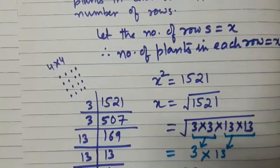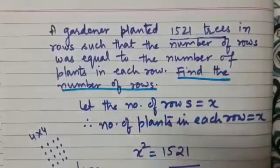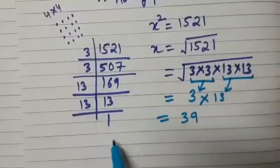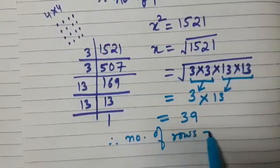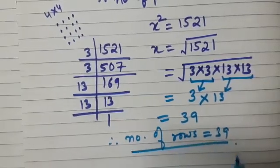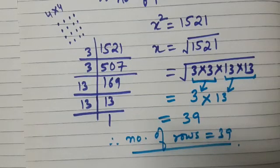Finally, you are going to write down the answer. Here the question was that we need to find the number of rows. Therefore, the number of rows is equal to 39. I hope this question is clear to you. Happy learning. Bye-bye.